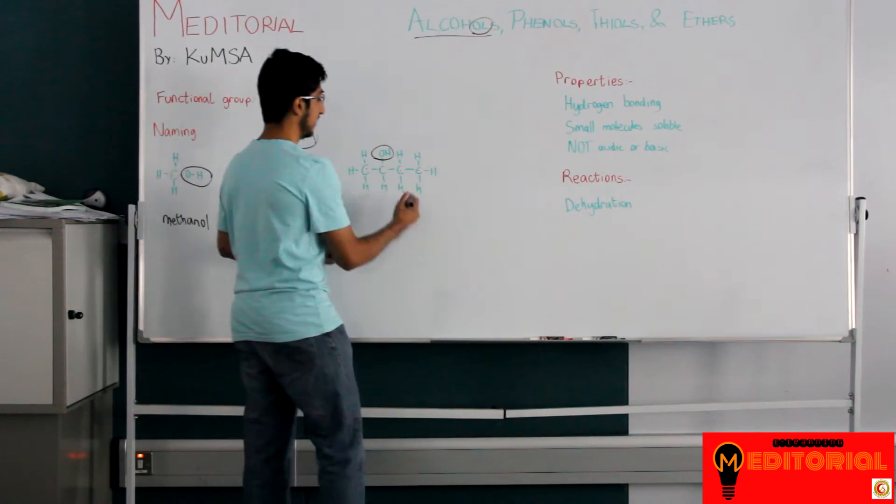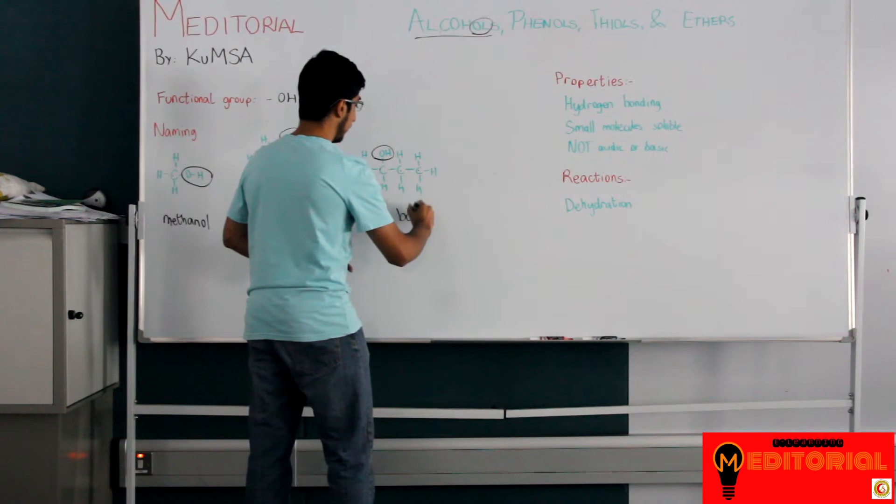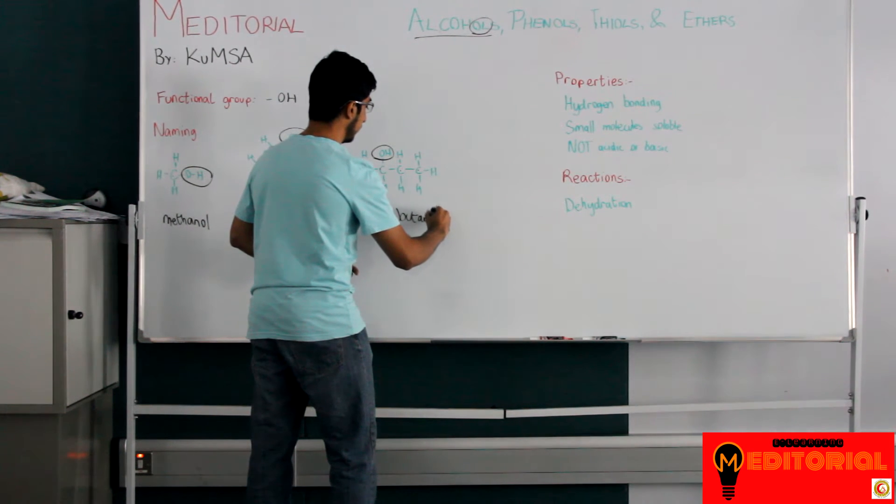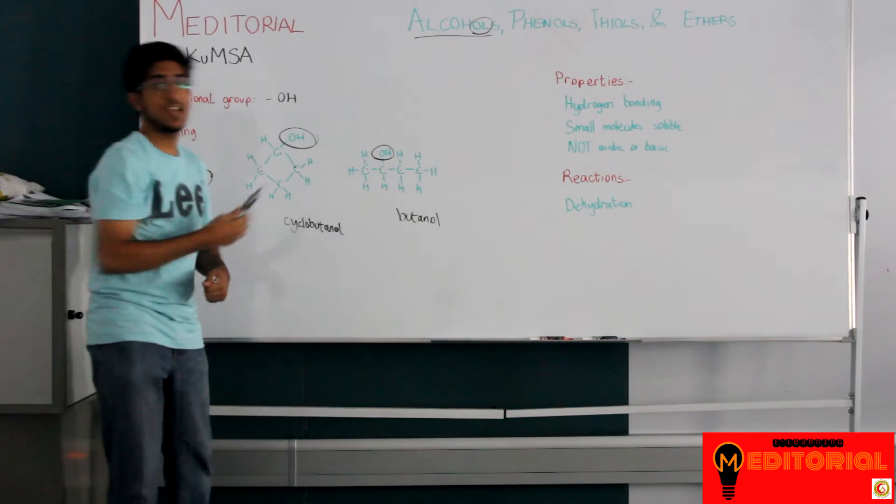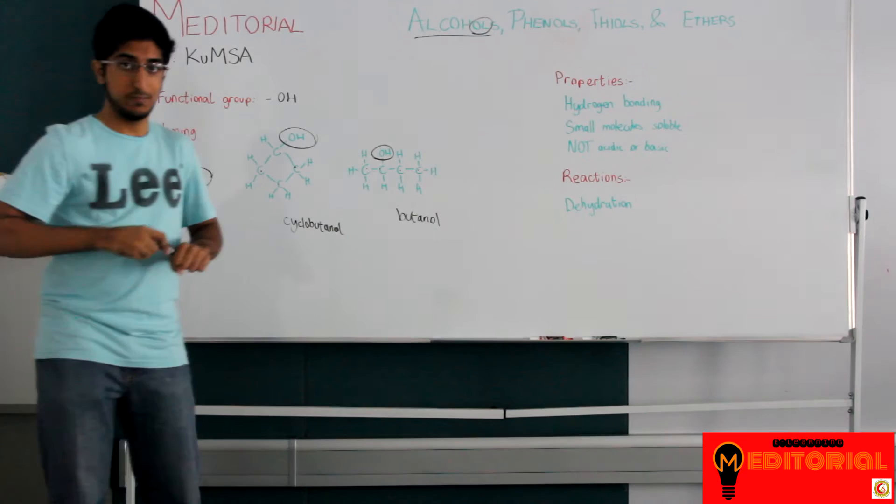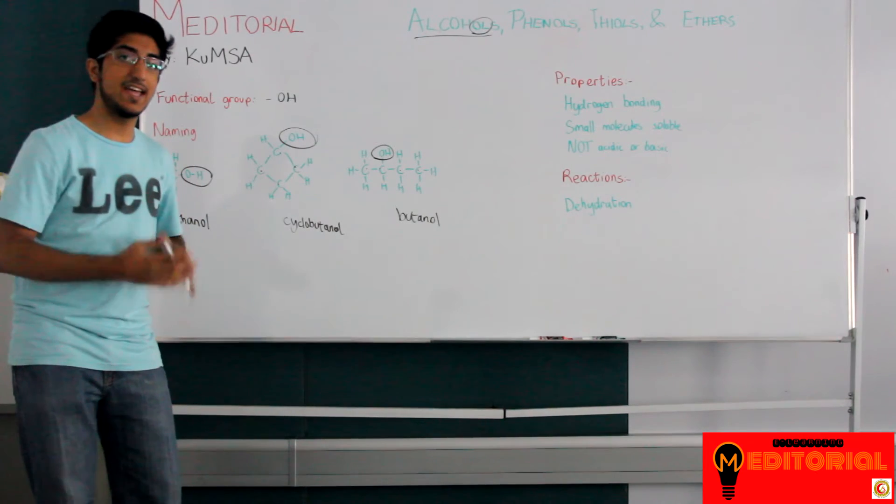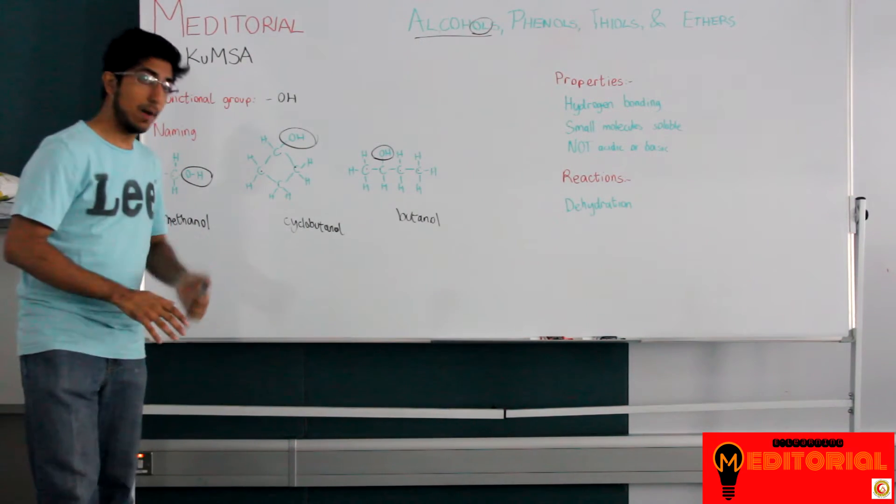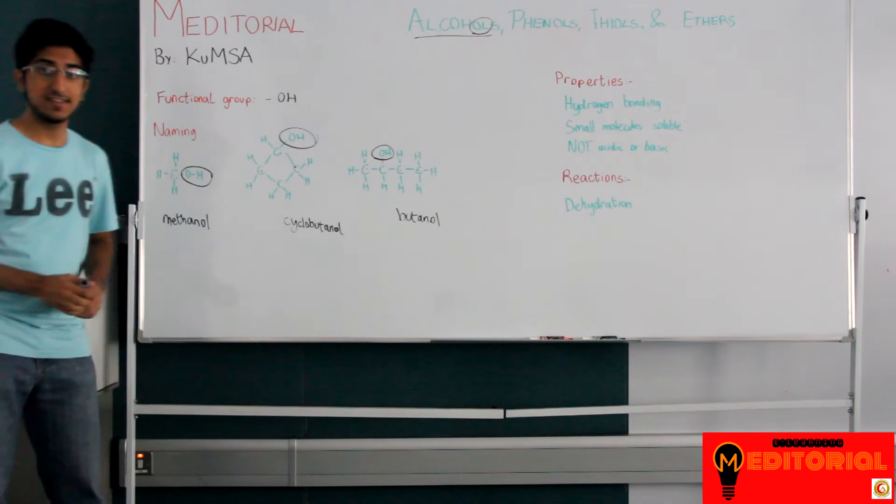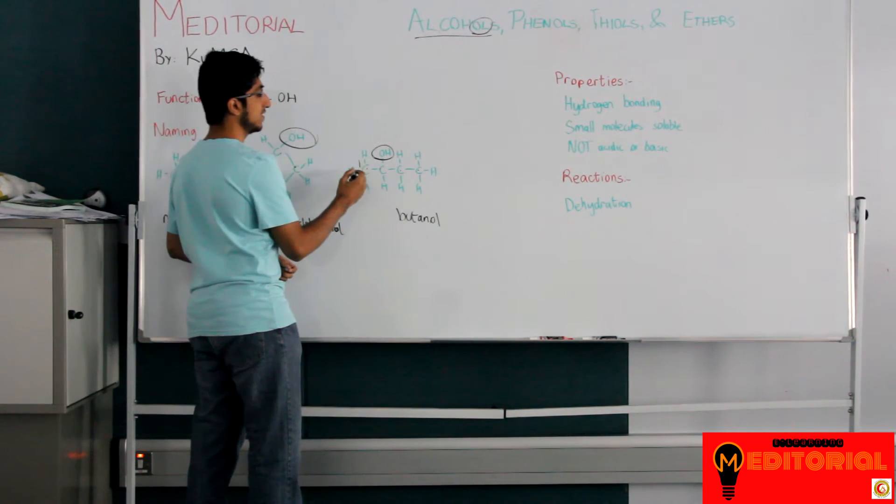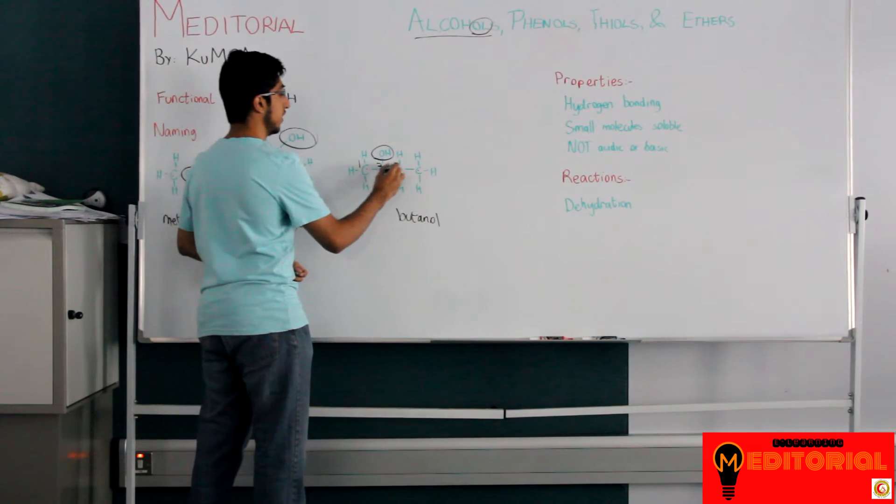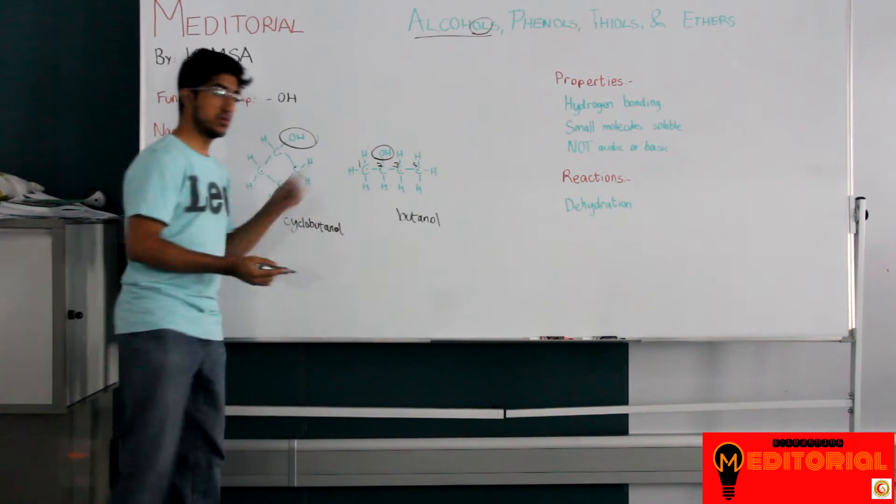However, as many of you have already noticed, the OH is not at the first position. In this case, the OH is at a different position. And we have to specifically say which position, which carbon position, the OH is at. In this case, it's at carbon number two. Because if you start on this side, one, two, three, four. Two is the lower number.